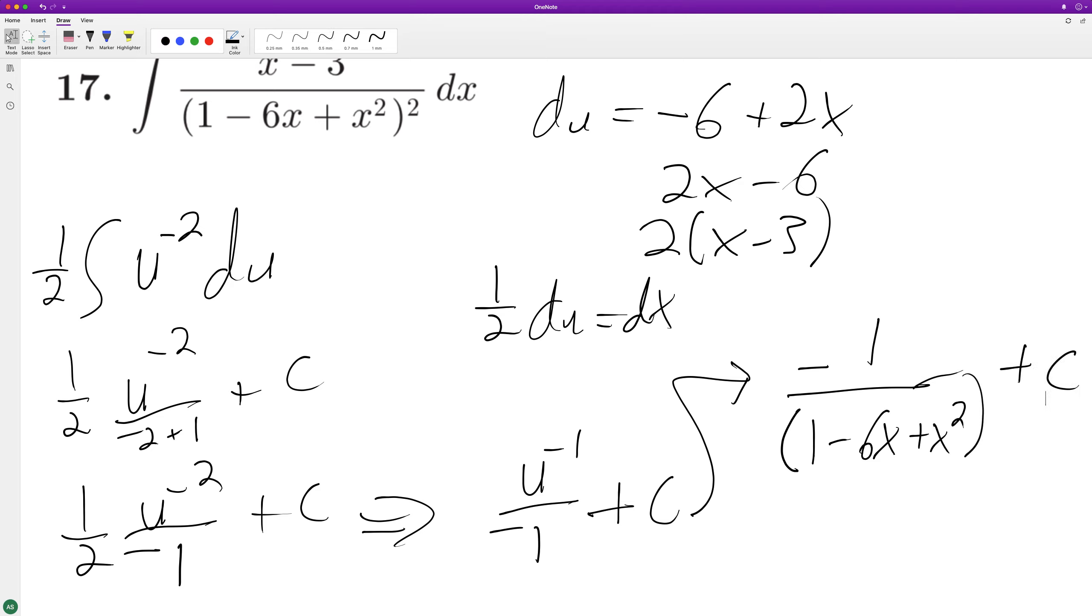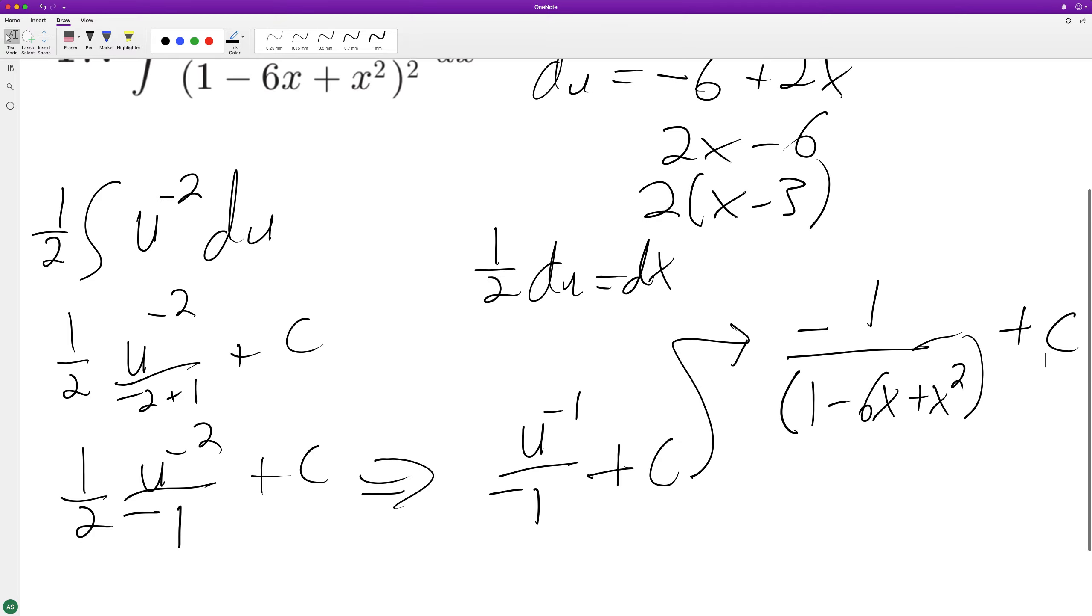And we can leave it like that or if you want to go crazy you can distribute the negative. Oh, and the 2 should be on the bottom. I multiply that 1 half there. Okay, we can go negative 1 over 2 minus 12x plus 2x squared plus c. And that's it.